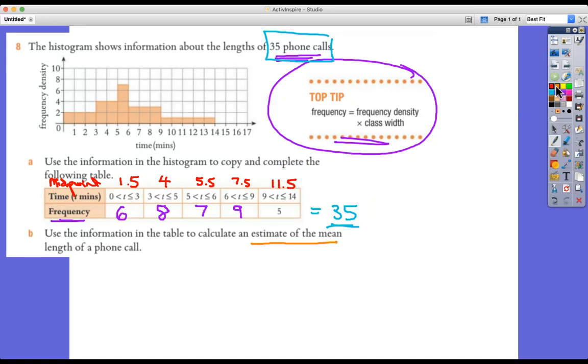So we're assuming everybody, we don't know the actual data. We don't know the exact specifics. I mean, it could be that all six of these people had exactly three minute phone calls. We don't know. But we're assuming the average. So it's going to be an estimate of the mean.